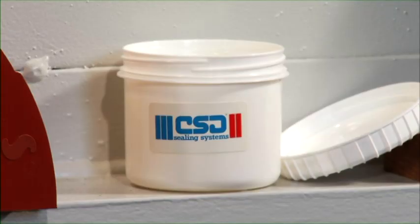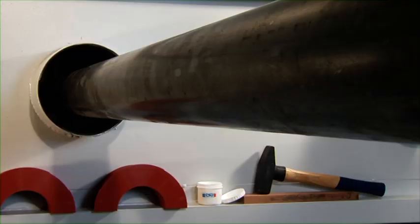All you need for installing the slip sill plug is CSD lubricant, a hammer and a piece of wood.